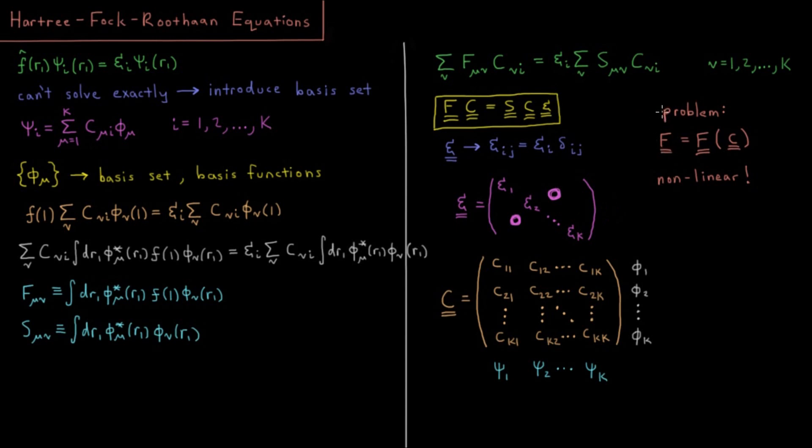But the only problem is that this Fock operator is a function of the C matrix. Because we note that the Fock operator itself in the two-electron terms depends on what all the other orbitals are. If we're looking from the perspective of orbital 1, it cares what orbitals 2 through k are because it has to interact with those through the Coulomb and exchange operators. To know what the Fock operator is for orbital 1, we have to know orbitals 2 through k. To know what it is for orbital 2, we have to know 1 and 3 through k. You have to know what all the other orbitals are in order to build the Fock matrix, and you have to build the Fock matrix to know what all the orbitals are.